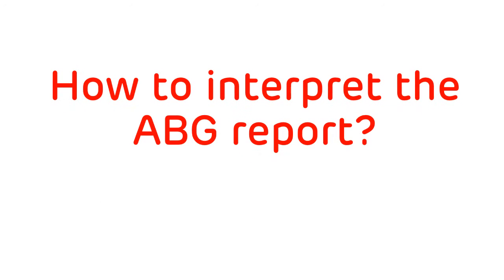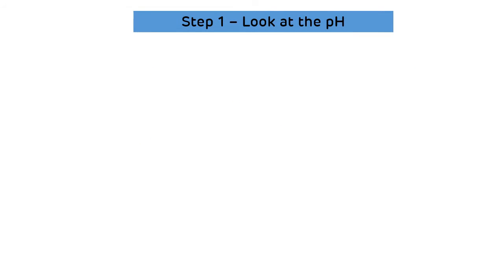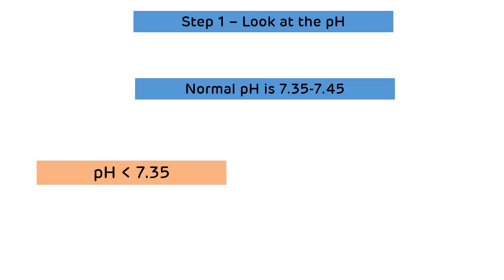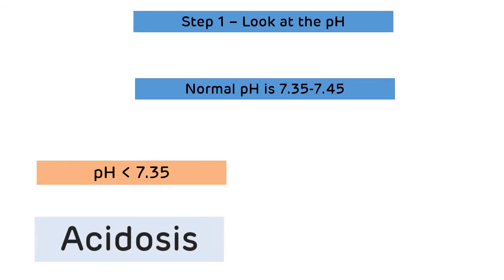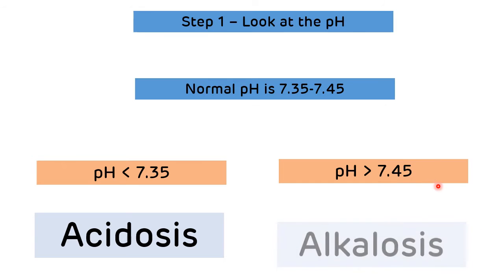Now, how do we interpret the ABG report? There are three steps. Step one: look at the pH. Normal pH is 7.35 to 7.45. If the pH is less than 7.35, it is acidosis. If the pH is greater than 7.45, it is alkalosis.